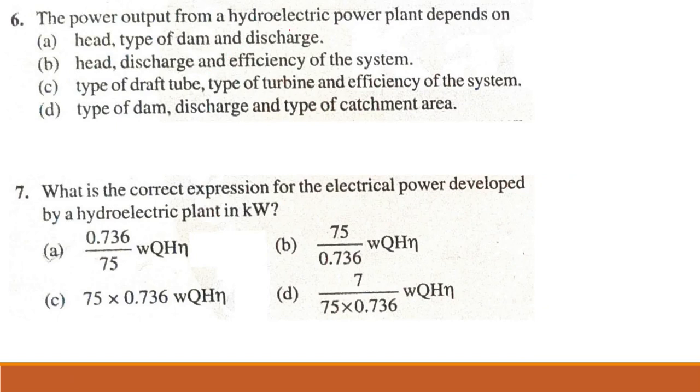Problem 6. The power output from the hydroelectric power plant depends on: head, type of dam and discharge; head, discharge and efficiency of the system; type of draft tube, type of turbine and efficiency; or type of dam, discharge and type of catchment area. The answer is: power developed equals 0.736 divided by 75 times W times Q times H times eta. So power developed is primarily based upon eta (efficiency), H (head), and Q (discharge). Option B is correct.